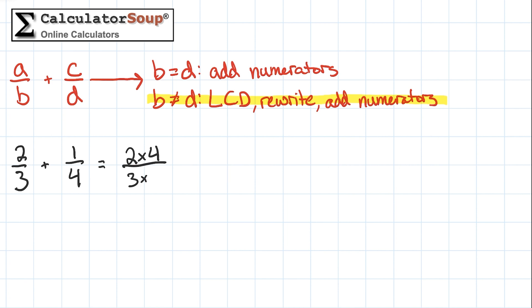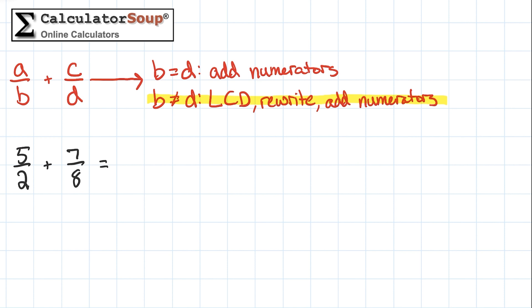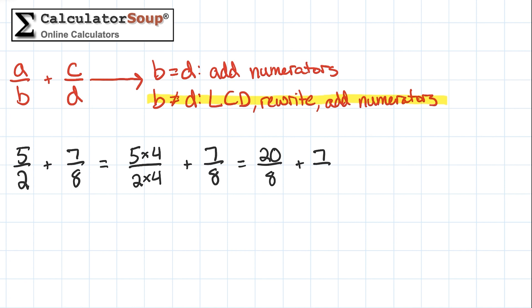Let's do one more example: 5/2 plus 7/8. The LCD of 2 and 8 is 8, so we will find the equivalent fraction of 5/2 with 8 as the denominator. To do this, multiply both the numerator and denominator by 4. We do not need to change the fraction 7/8 since 8 is already in the denominator. 5 times 4 is 20, and 2 times 4 is 8, so our new equation is 20/8 plus 7/8.